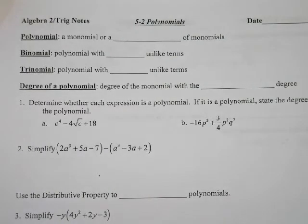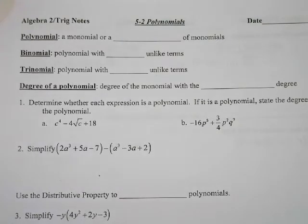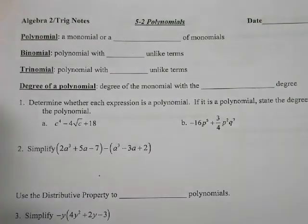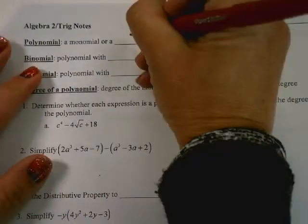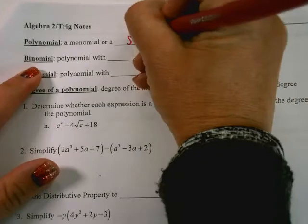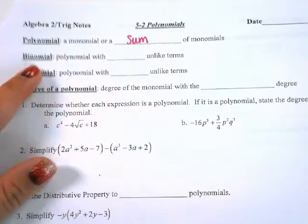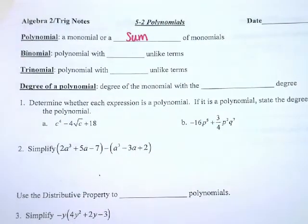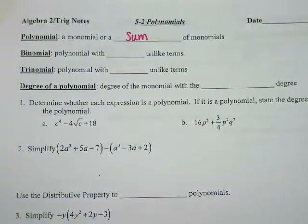So 5-2, the first thing we have talks about a polynomial. We talked about a monomial before, meaning one term. But a polynomial is a monomial or the sum of monomials. So we're going to start to see plus signs and minus signs — so, multiple terms.